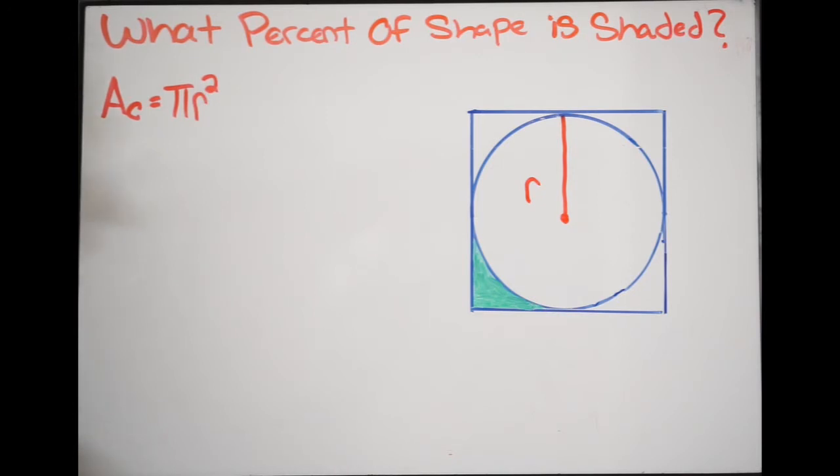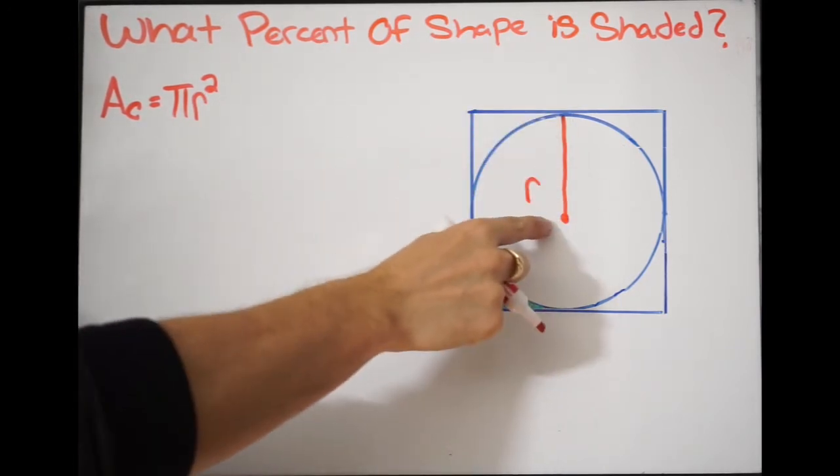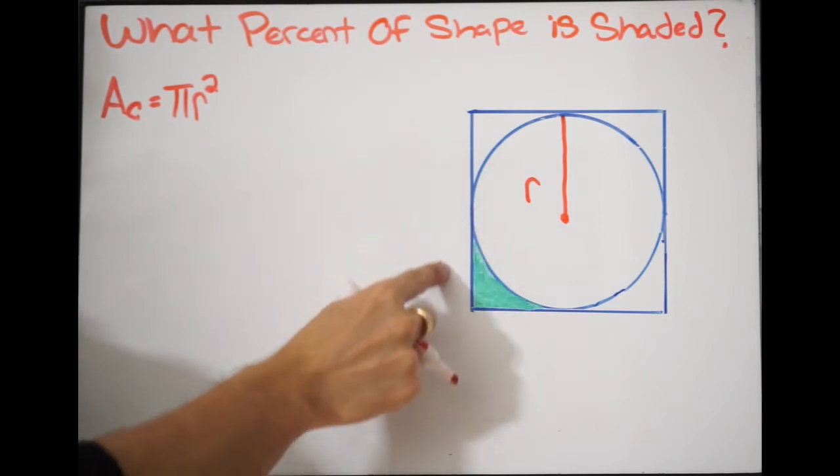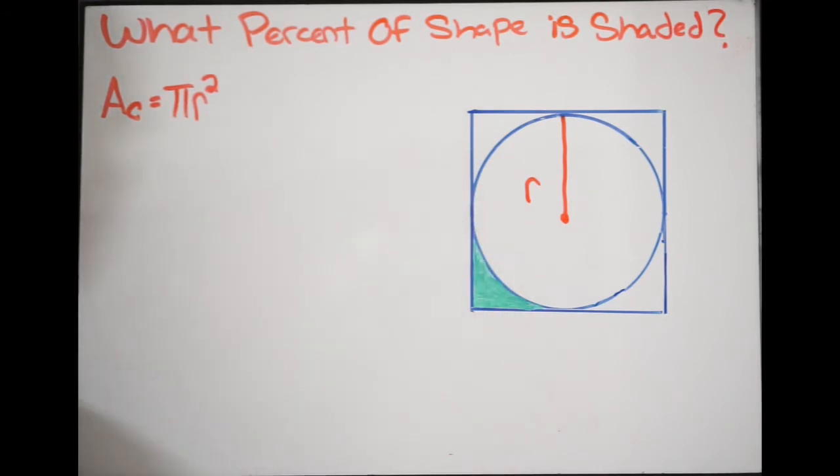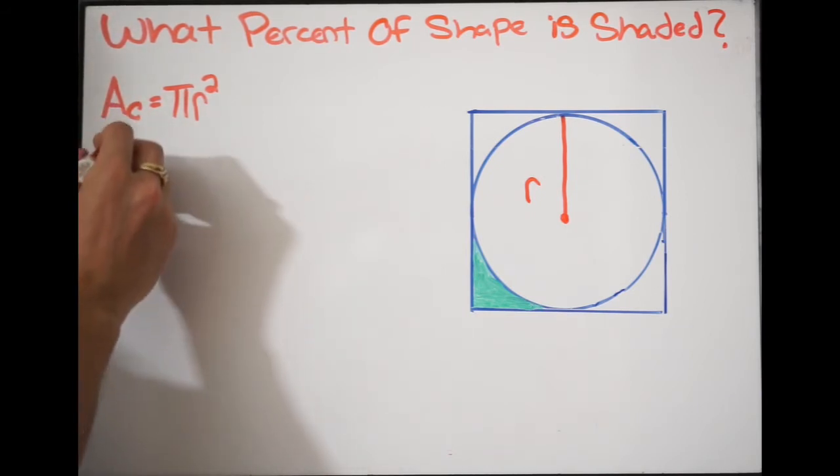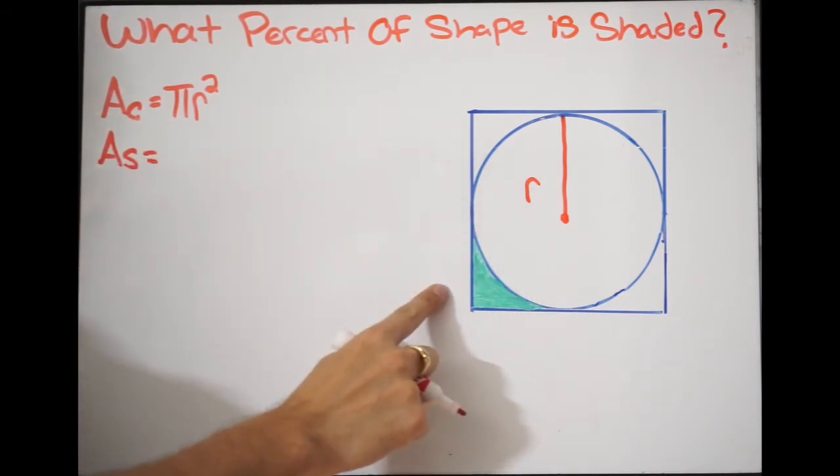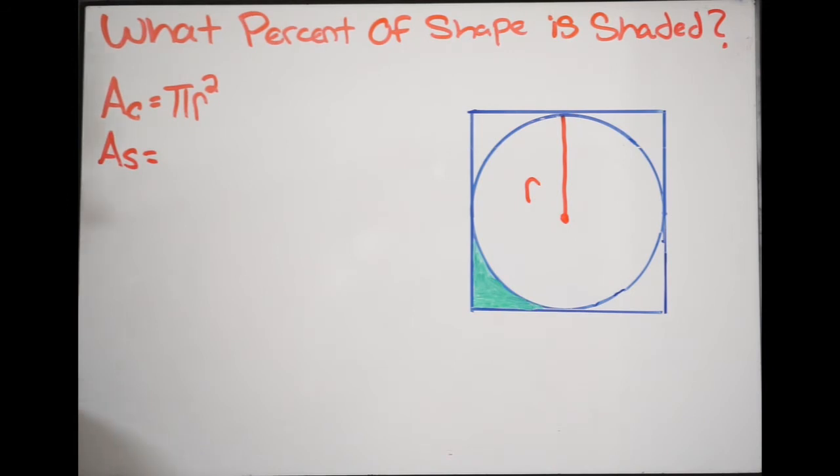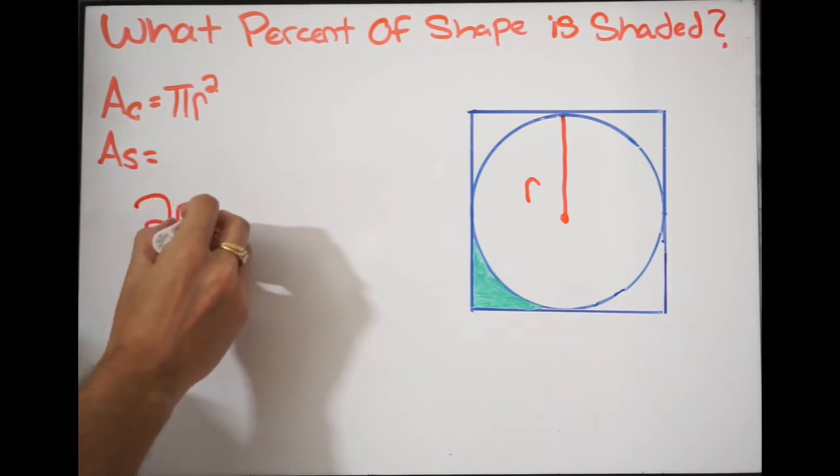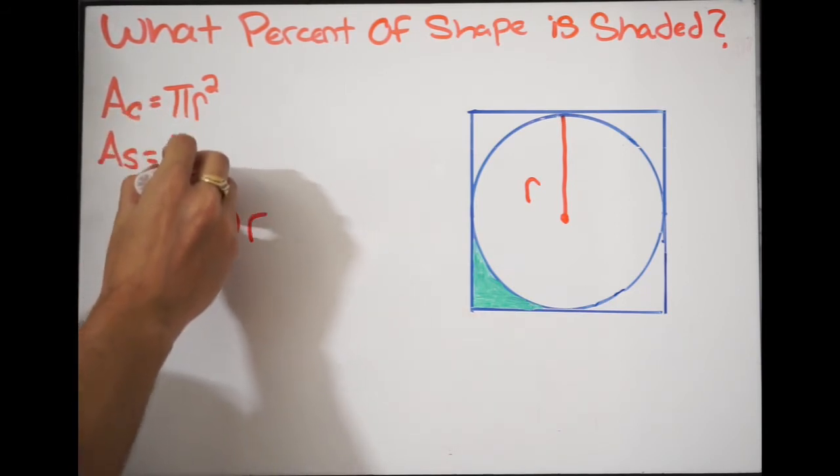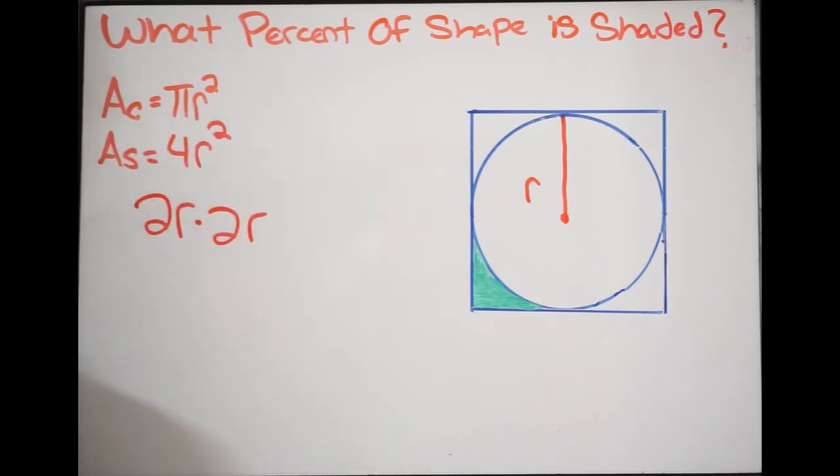And now let's think about our square. So if our radius is here, and then we have our side length of our square, we know that we can call our side length 2R. We want to keep everything in terms of R here. So my area of my square, this will be 2R, this will be 2R. And if I want to find the area of a square, I simply just multiply the sides. So essentially what I'm doing is I'm doing 2R times 2R, which is going to give me 4R squared.